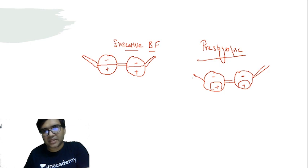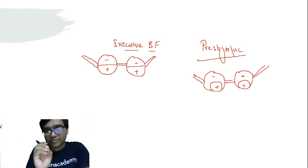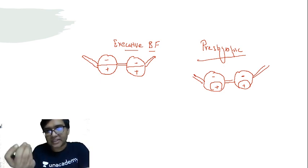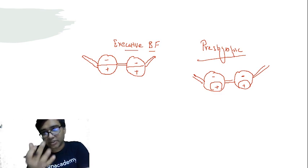So this is called presbyopic glasses. Remember, the executive bifocal is usually given in congenital squint and the presbyopic glasses are given after 40 years of age. This presbyopic power would gradually increase with age.